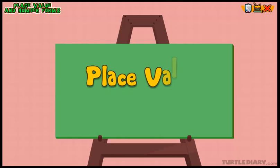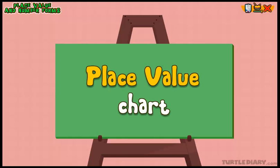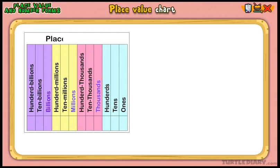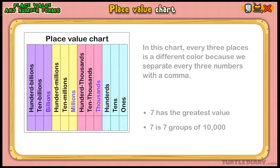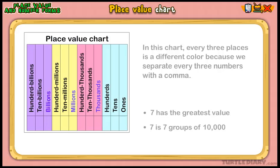This is a place value chart. It can help you learn the different place values in a number. In this chart, every three places is a different color because we separate every three numbers with a comma.